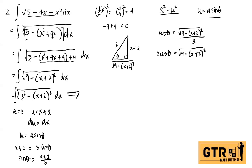We need the value of dx. From x plus 2 equals 3 sine theta, taking the differential of both sides: dx equals 3 cosine theta d theta.